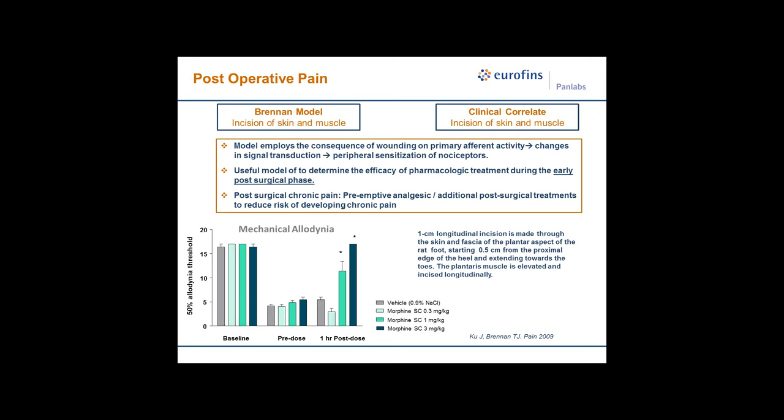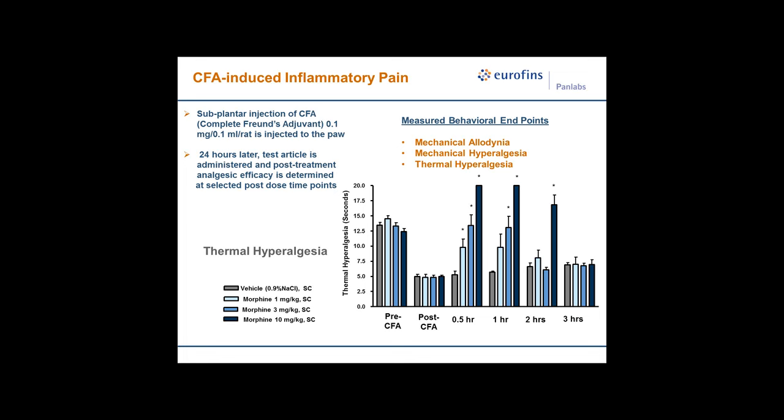I've chosen the CFA-induced inflammatory pain model as our representative inflammatory pain model. We offer several measured endpoints: allodynia, Hargraves, and Randall-Seletto. In this thermal hyperalgesia model, it has a nice therapeutic window of effect and is relevant in that both animal models and the clinic show that inflammatory areas upregulate plasticity of peripheral nociceptors, causing them to become highly sensitized and also producing sensitization in non-inflamed areas.